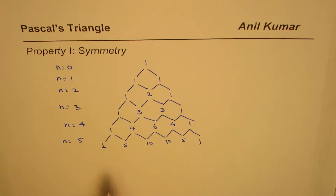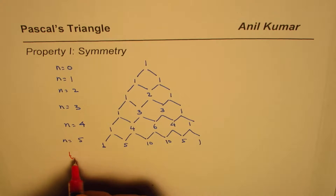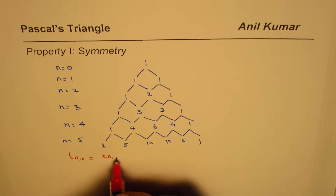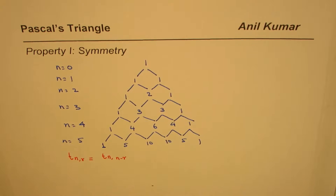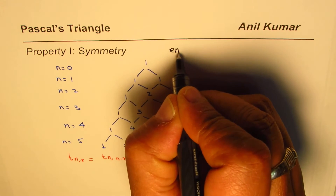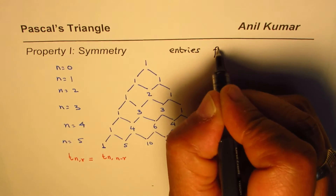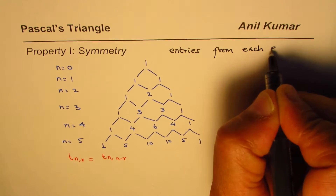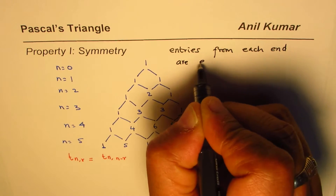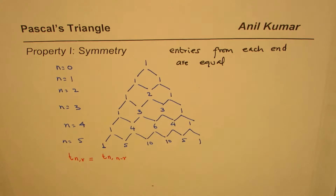What you really notice in this particular case is that there is a symmetry. The symmetry is that T(n, r) is actually equal to T(n, n minus r). In any row of Pascal's triangle, entries equidistant from each end are equal.